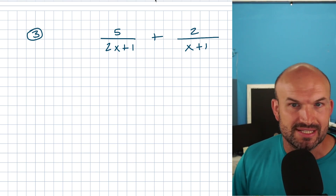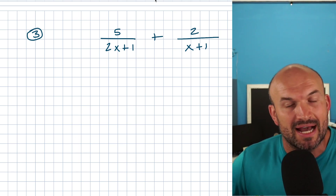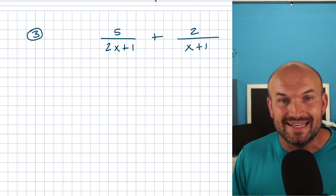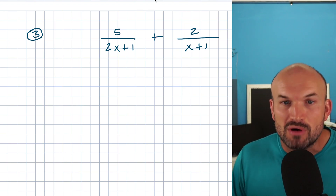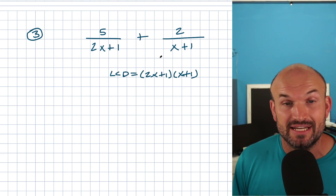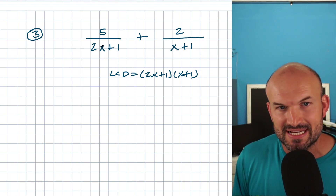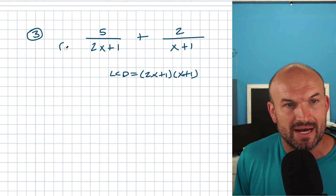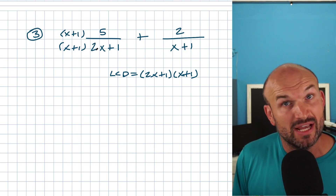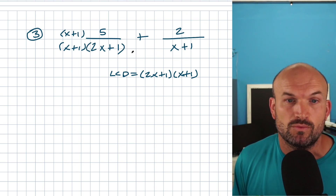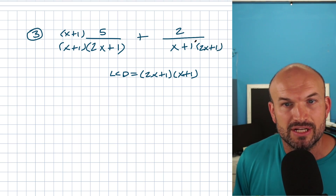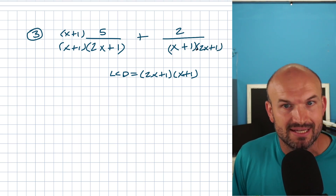We have two separate denominators and I can't multiply just one by a number. So I need to find the LCD. The quickest and easiest way when you cannot simplify your denominators is to multiply them together. In this example, the LCD is 2X plus one times X plus one. On the left-hand side I already have 2X plus one, so I multiply by X plus one in parentheses. On the right-hand side I have X plus one, so I multiply by 2X plus one in parentheses. Parentheses are extremely important here.